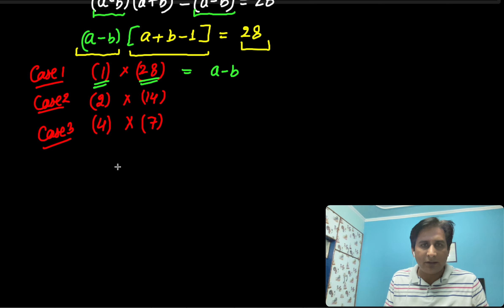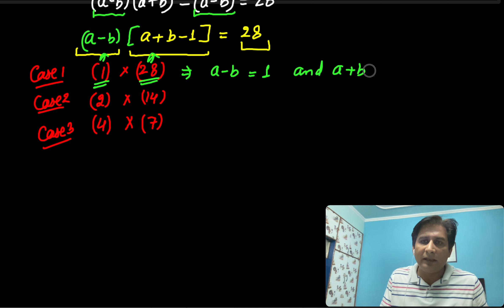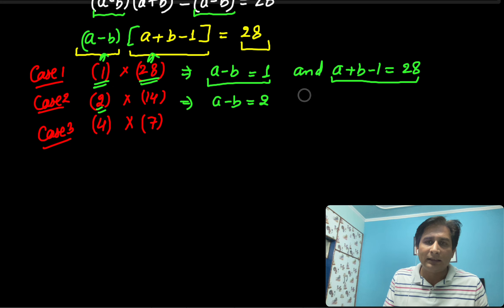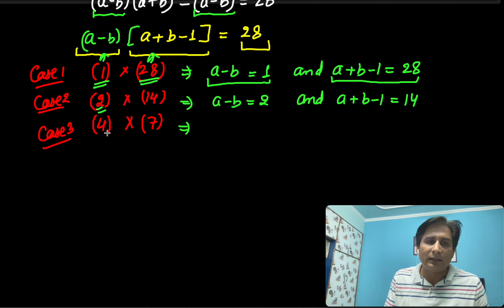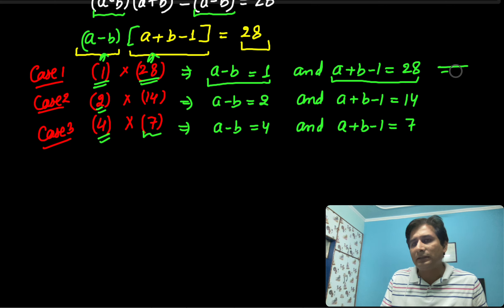Setting up the three cases: Case 1 — A minus B equals 1 and A plus B minus 1 equals 28. Case 2 — A minus B equals 2 and A plus B minus 1 equals 14. Case 3 — A minus B equals 4 and A plus B minus 1 equals 7.